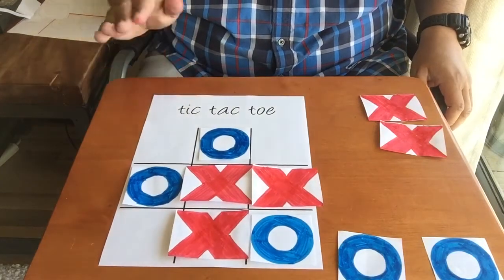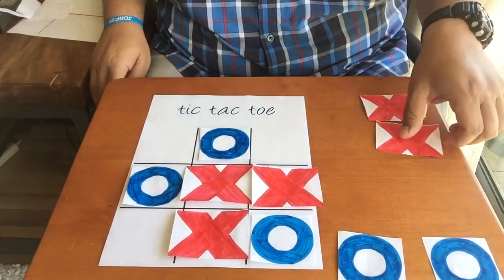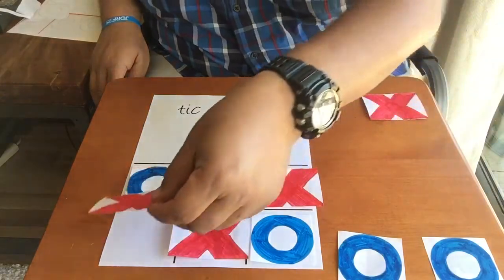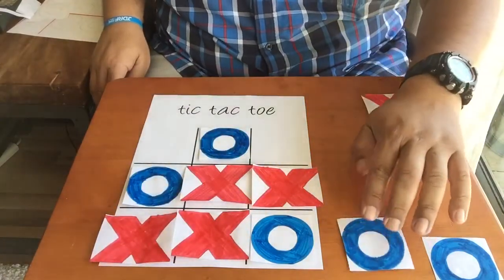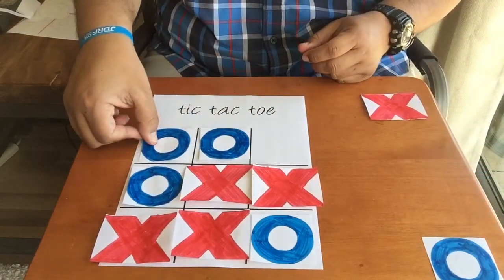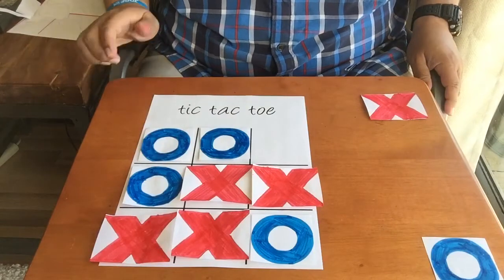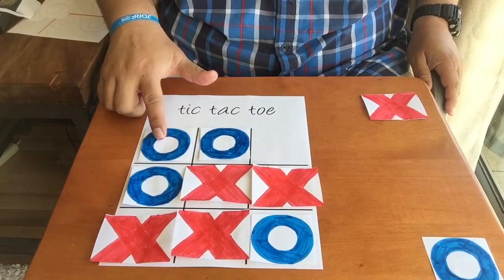Now you're going to try to trick him because you don't want him to know where you're going to go next. So if I go here then it's Blue's turn and then Blue's going to go right there. But do you see what happened?